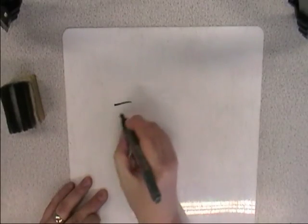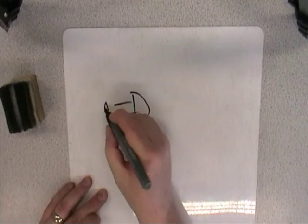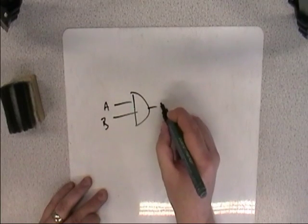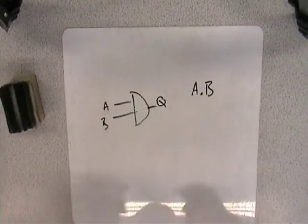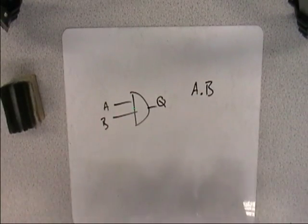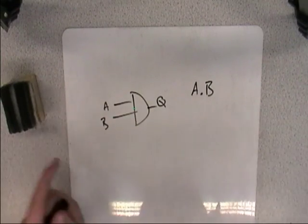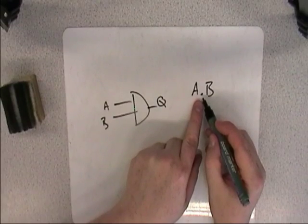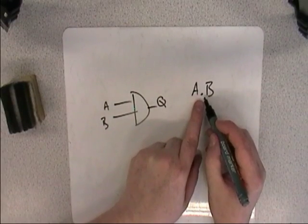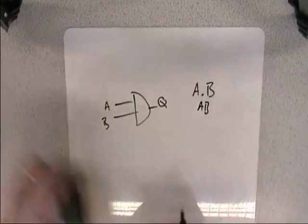We can also write them as algebraic terms, kind of maths-y terms. So an AND gate between A and B, we can write like this, A AND B. And if you're a mathematician, which a lot of computer scientists are, although not all of them, you'll recognize this in maths, in algebra, would be a multiplication. So you could also write it as AB if you wanted, but the dot is quite helpful.